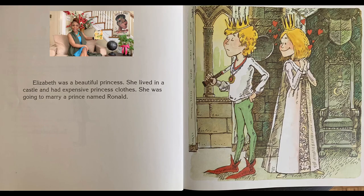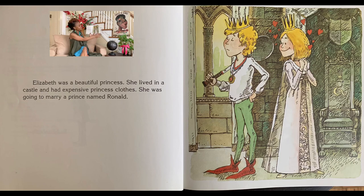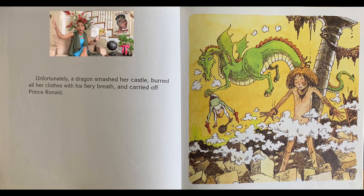The Paper Bag Princess by Robert Munch. Elizabeth was a beautiful princess. She lived in a castle and had expensive princess clothes. She was going to marry a prince named Ronald. Unfortunately, a dragon smashed her castle, burned all of her clothes with his fierce breath, and carried off Prince Ronald. Oh no. What do you think is going to happen next?